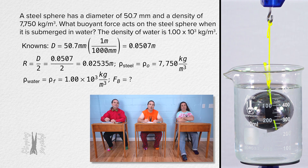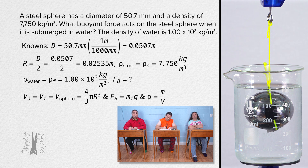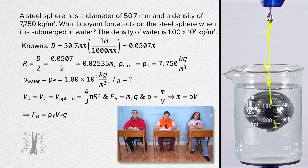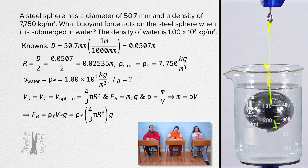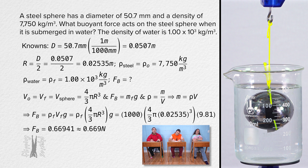Billy, please solve the problem. The steel sphere is submerged in water, so the volume of the object is the same as the volume of the fluid displaced by the object, which is the volume of a sphere, or four-thirds pi times radius cubed. Buoyant force equals the weight of the fluid displaced by the object, or the mass of the fluid displaced times the gravitational field strength. And since mass equals density times volume, buoyant force equals the density of the fluid displaced times the volume of the fluid displaced times the gravitational field strength. Substituting in numbers: 1,000 times four-thirds times pi times 0.02535 cubed times 9.81 equals 0.66941, or roughly 0.669 newtons with 3 sig figs.